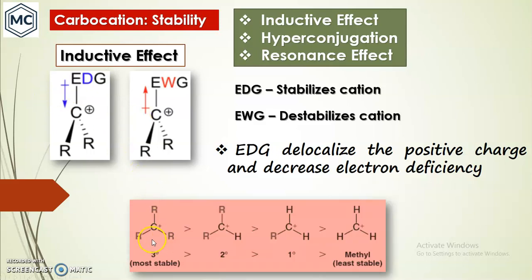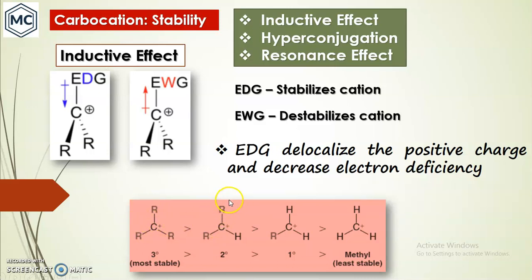Comparing the stability of tertiary, secondary, primary, and methyl carbocations via inductive effect: tertiary is most stable because it has three electron-donating alkyl groups attached, secondary has two, primary has one, and methyl has none. The greater the number of electron-donating groups, the greater the stabilization.